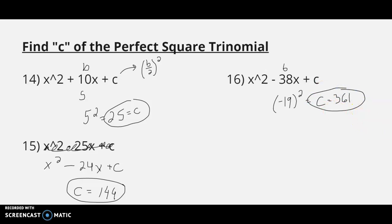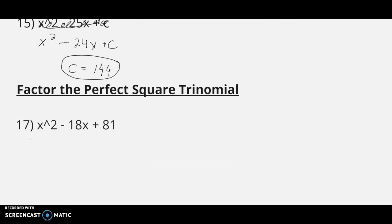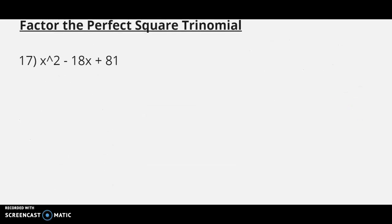That'll take us to our last problem, which says factor a perfect square trinomial. X squared minus 18x plus 81. If you know you're dealing with a perfect square trinomial, it's really simple. Take the square root of the first and last terms. And then, that will tell you what it's going to be. In this case, x minus 9 quantity squared. That's all there is to it.